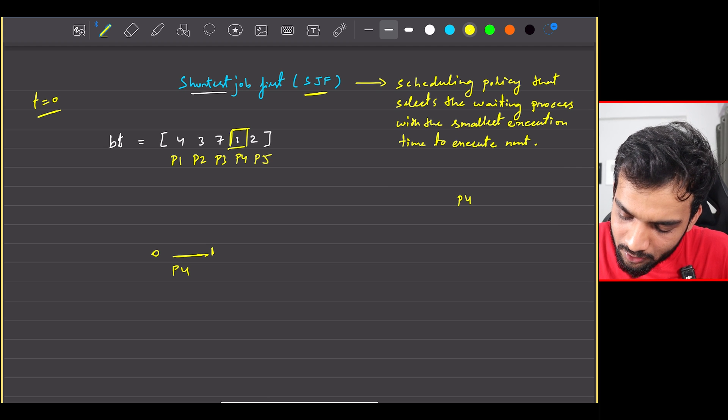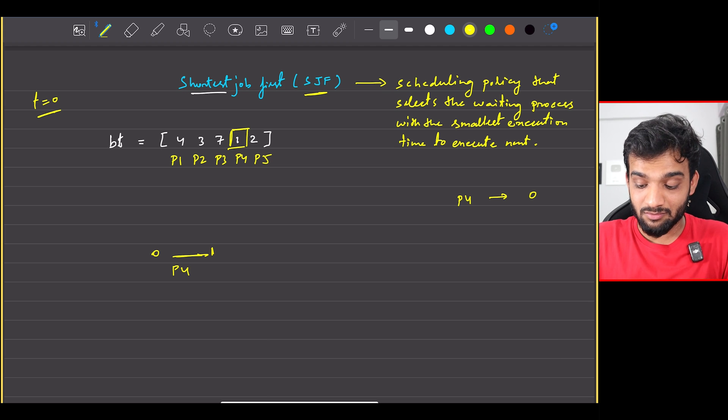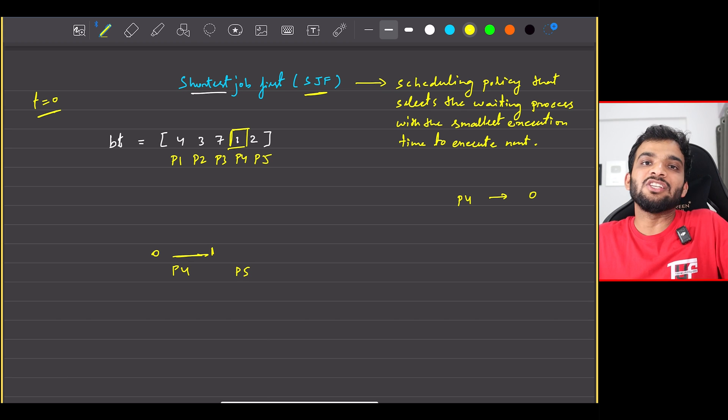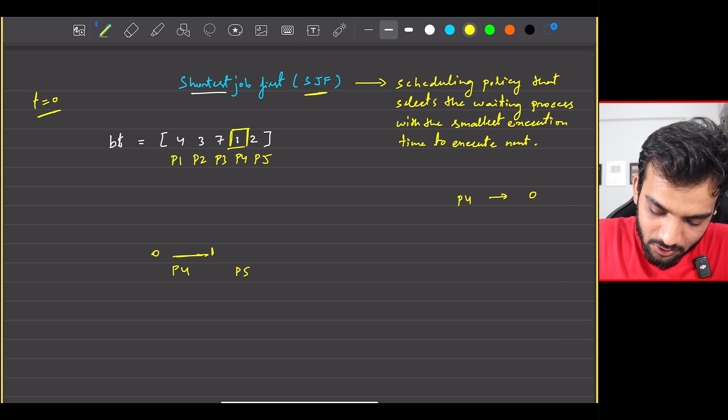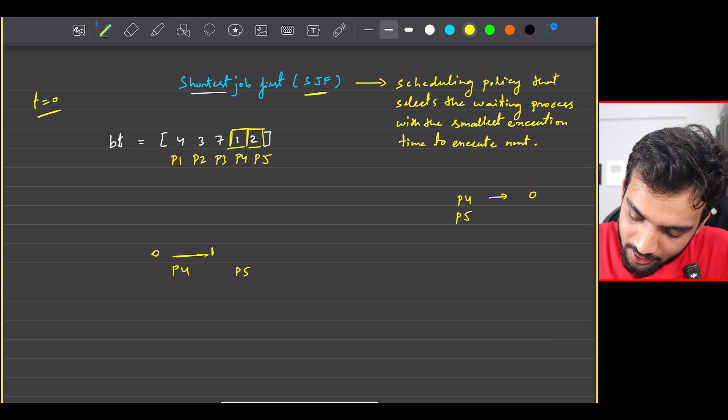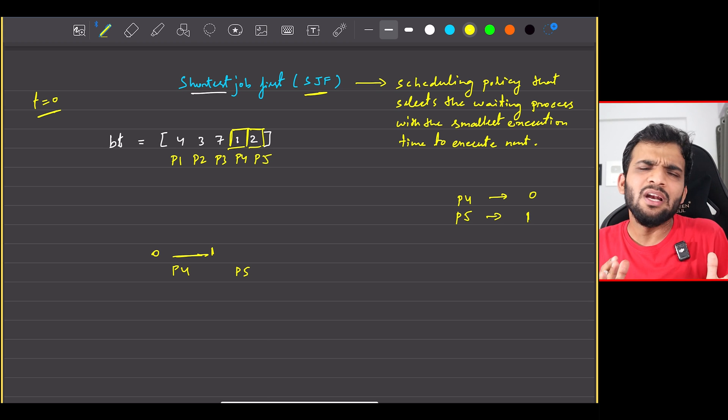Can I say for P4 the waiting time was zero because it started at time zero? Agreed. Which one will be after this? P5, because it has the least execution time which is two. But when does P5 start? Can I say that P5 is starting at time one because that is when it starts, and when will it end?